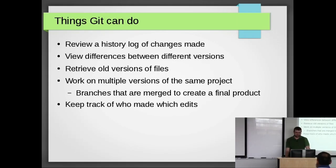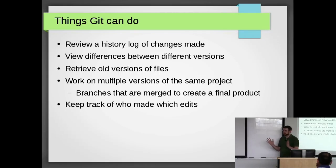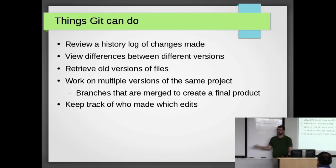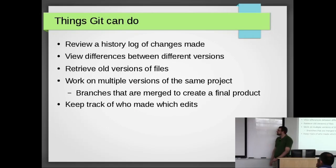Things Git can do: you can review your history, view differences between different versions. You can have two versions of the exact same project, compare one directly with another, and you only have one file — you don't actually have to keep track of which files are where. You can retrieve old versions. Let's say you deleted something you wanted to scrap, but you can go back and find it. That's pretty awesome — that saved my butt more than once. You can work on multiple versions of the same project using branches that are merged to create a final project.